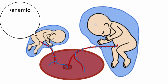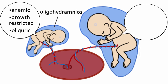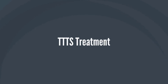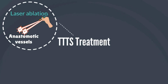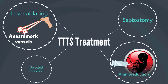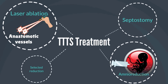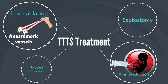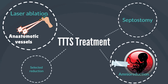This leads to an imbalance of blood volumes. The donor becomes anemic, growth-restricted, and oliguric with oligohydramnios from decreased renal perfusion. The recipient becomes polycythemic with circulatory overload, also known as hydrops. Treatment for twin-to-twin transfusion includes laser ablation of fetal anastomotic vessels, amnioreduction, septostomy, or selected reduction. For a further review of twin-to-twin transfusion and other complications of multifetal gestations, please watch AFCO Educational Topic Number 20.